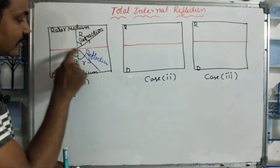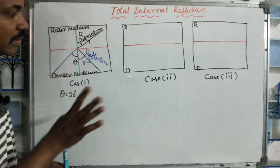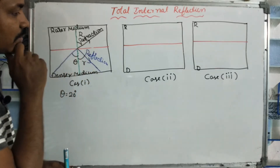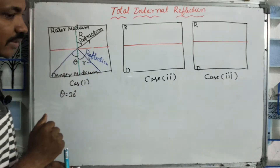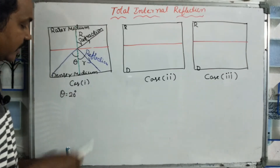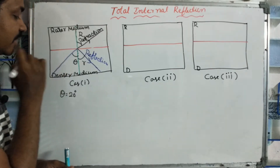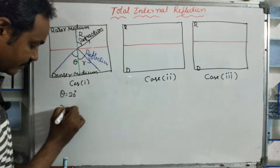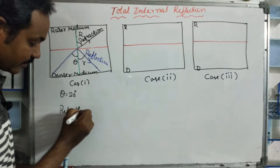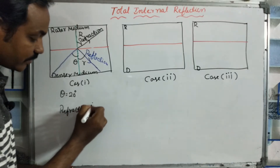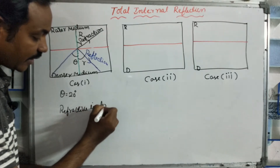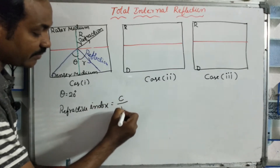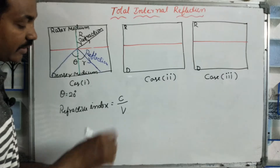Reflection occurs in the same medium and is not a problem. Refraction is a problem because light velocity is different in different media. The refractive index is defined as: refractive index equals light velocity in air divided by light velocity in the medium — that is, c divided by v.